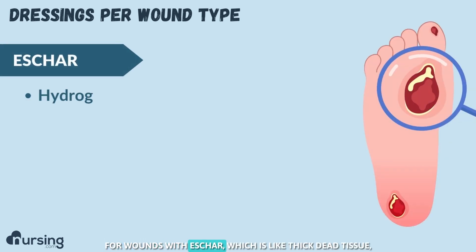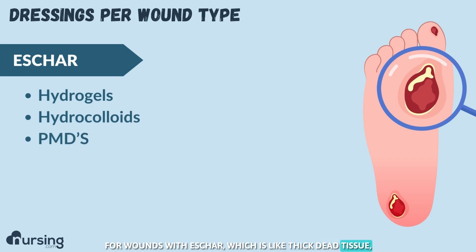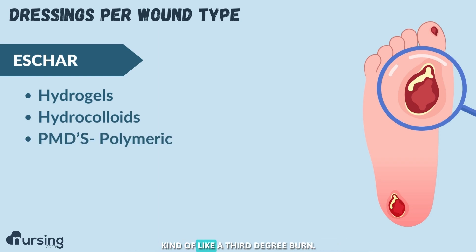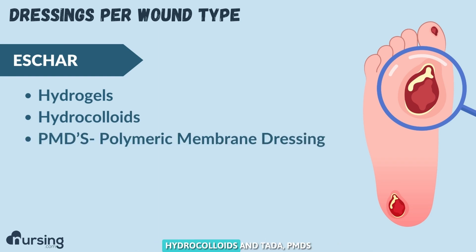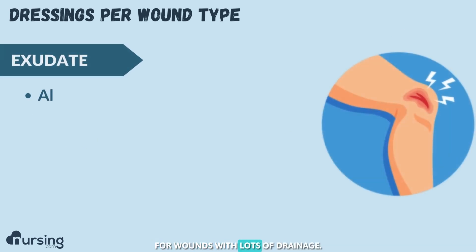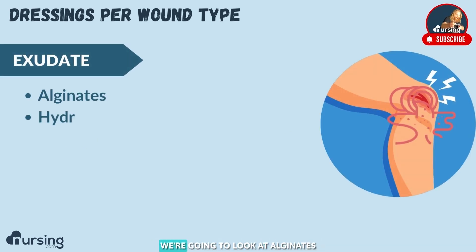For wounds with eschar, which is thick dead tissue — kind of like a third-degree burn — we're going to look at hydrogels, hydrocolloids, and PMDs.